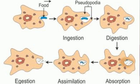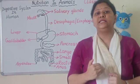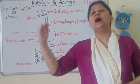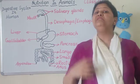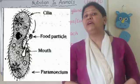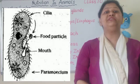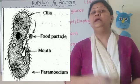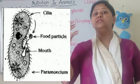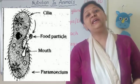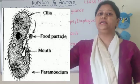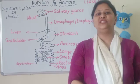This is the process of nutrition in amoeba. Now when we see paramecium, in paramecium there is no such structure of temporary finger-like projections as in amoeba. But there is a definite mouth where it takes food particles by the help of cilia, which bring food into paramecium, and then its digestion occurs.